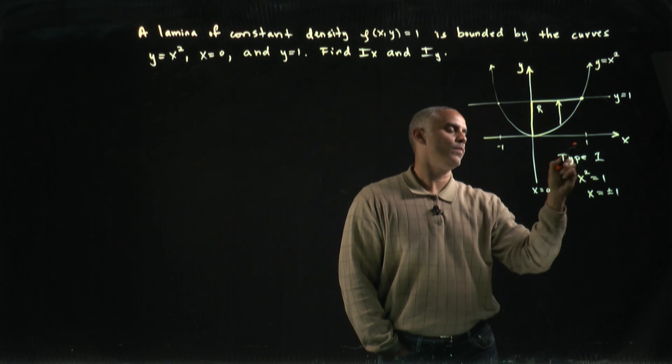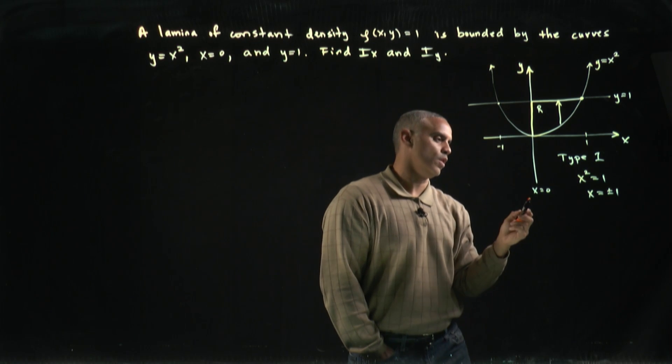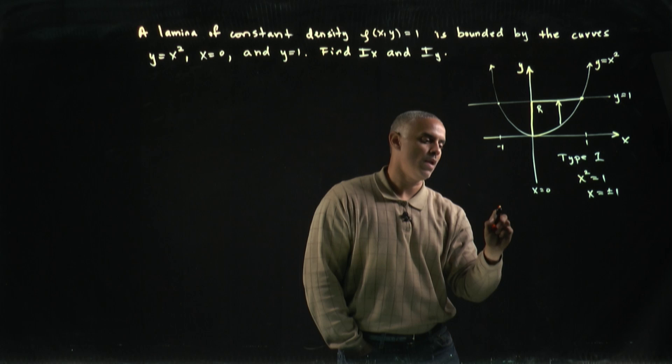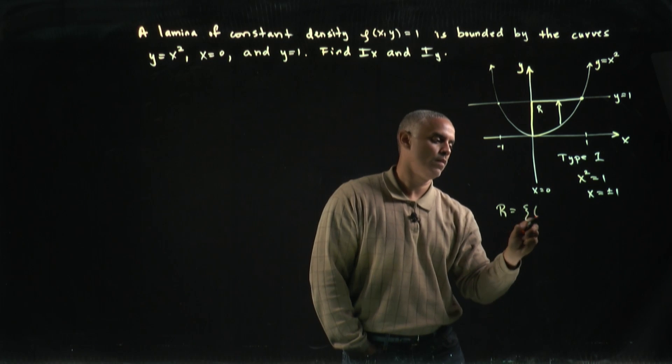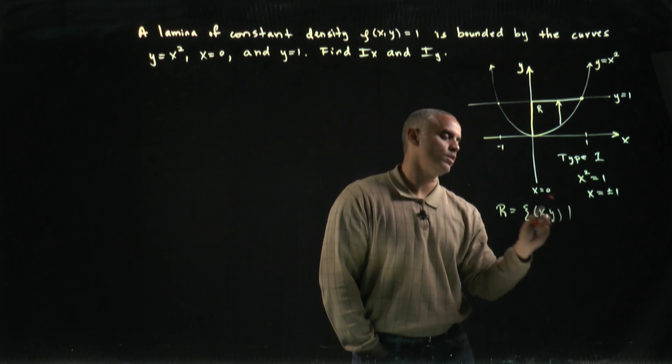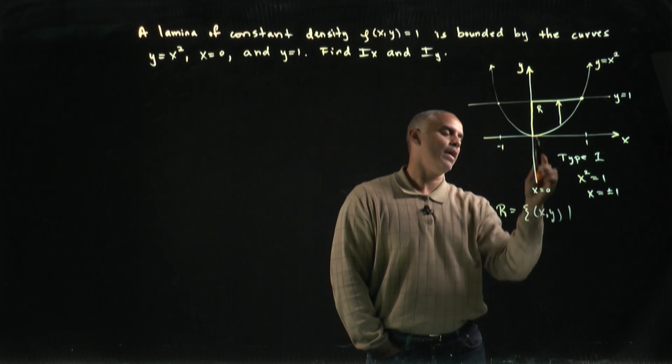But at minus 1, it's not the region that we're concerned with, so we'll just keep the plus 1. And I can write my region R now, it's all x, y, such that I'll sweep my x from 0 to 1.